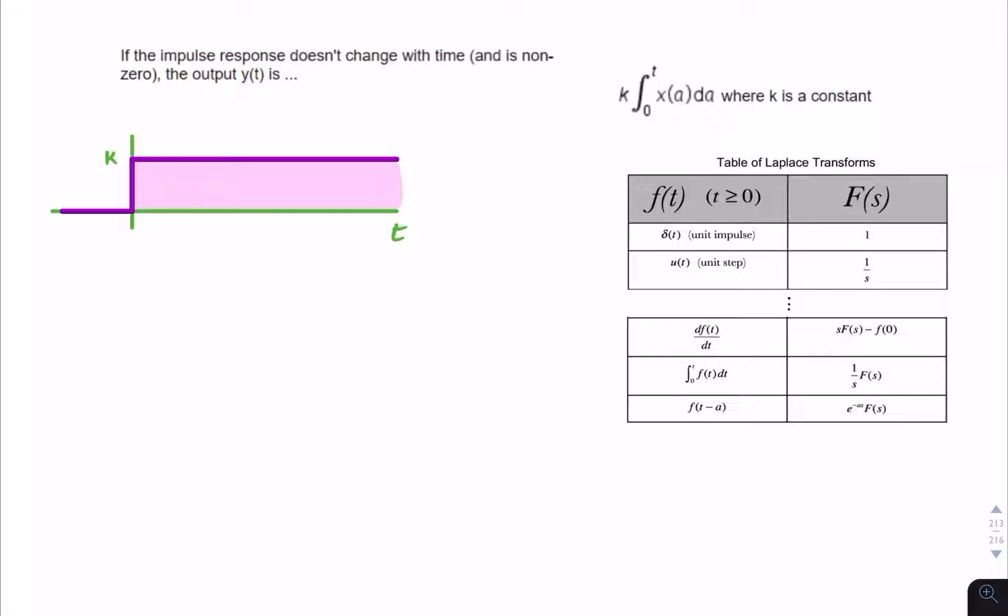In this question, we're told the impulse response doesn't change with time. So the impulse response is constant. If we wanted to plot a sketch of the impulse response H of T, it would look something like that. So it doesn't change with time.